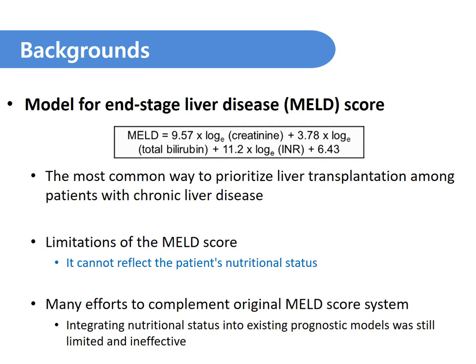The model for end-stage liver disease, MELD score, is the most common way to prioritize liver transplantation among patients with chronic liver disease. Despite its strong predictive value, it is unable to reflect a patient's nutritional status, which is a serious limitation of this score. Although many efforts have been made to complement the original MELD score system, the integration of nutritional status into existing prognostic models is still limited and ineffective.